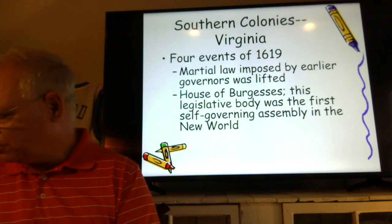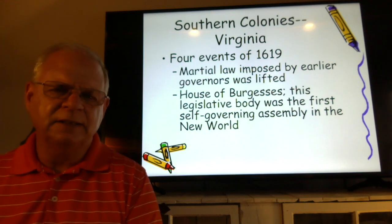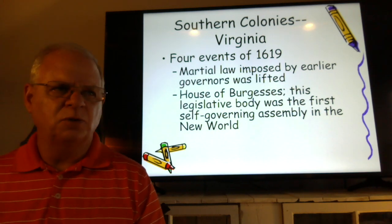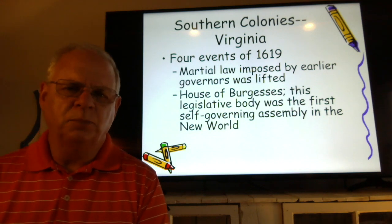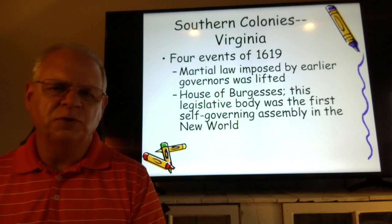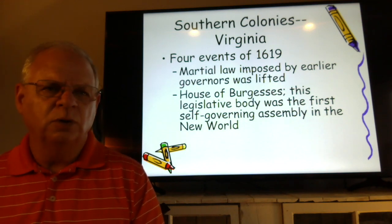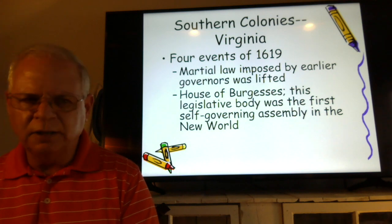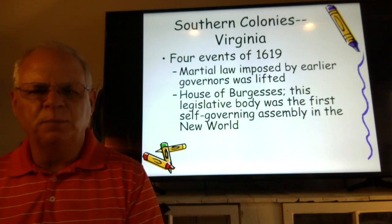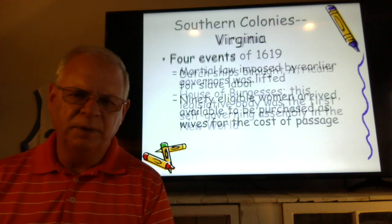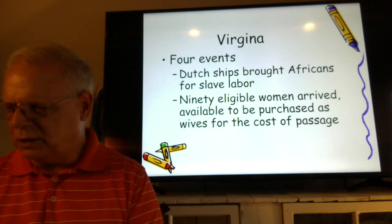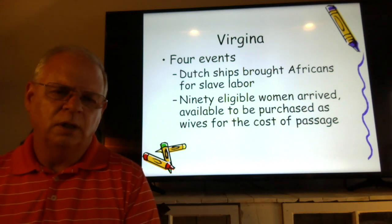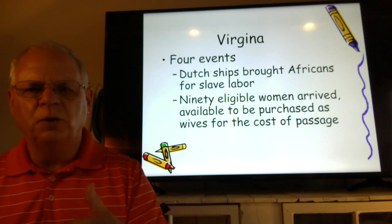Looking at the southern colonies and Virginia in particular, there were four events in 1619 that helped establish it. First, martial law imposed by earlier governors was lifted, encouraging more settlers. Second, the House of Burgesses got its start — the first legislative body in the colonies, where settlers governed themselves. Third, Dutch ships brought Africans for slave labor, beginning the triangular trade. The colonies eventually stopped importing slaves but slavery continued through those born to slaves, lasting until 1865.